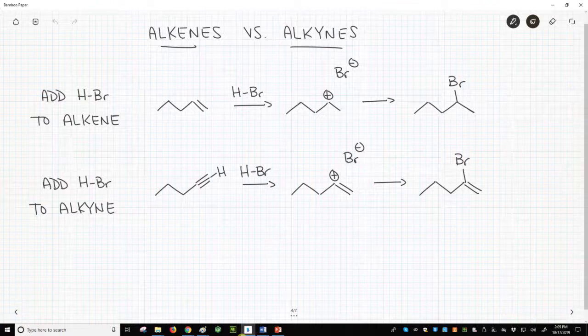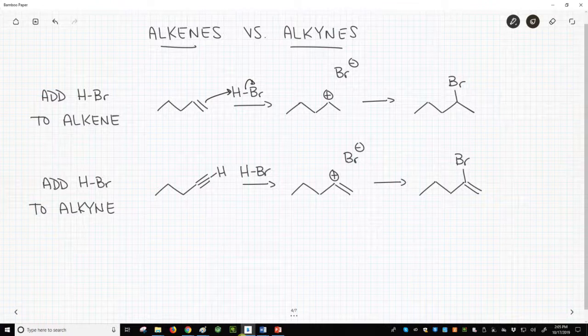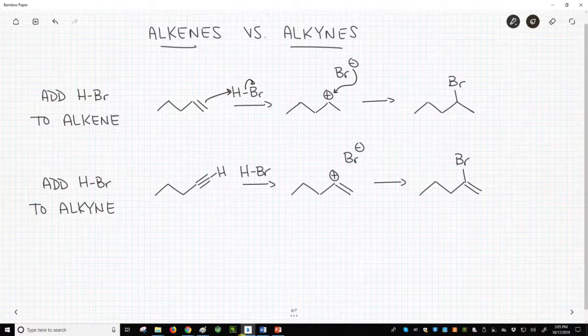We start by protonating the alkene to make a carbocation, the more highly substituted carbocation. The bromide then attacks the carbocation to complete the addition.